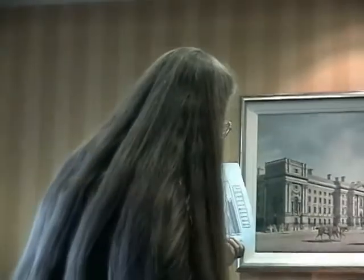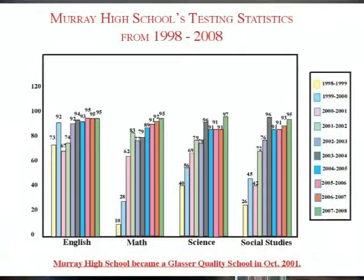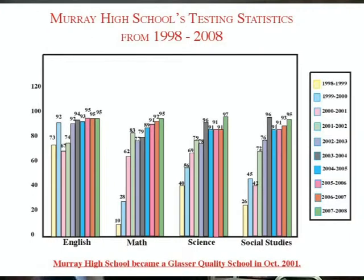And you can see the test results are pretty awesome. Especially in 2001 — the light green one — that's when we became a Glasser Quality School. That's the year we declared our becoming a Glasser Quality School and began to institute all its aspects. You can see how scores have stayed up ever since. Our goal last year was at least a 95% pass rate in everything, and we hit that — went beyond it in some areas. The writing was 100%.